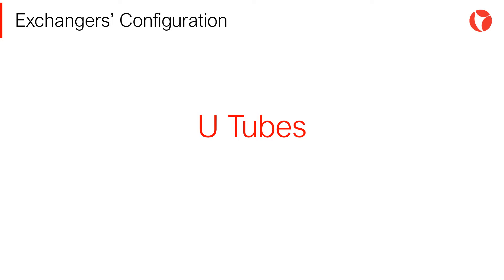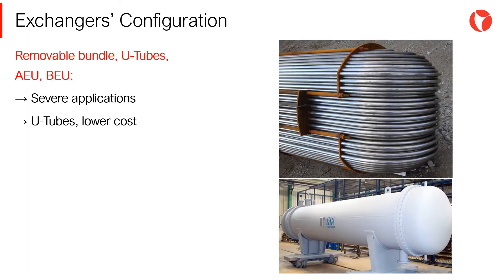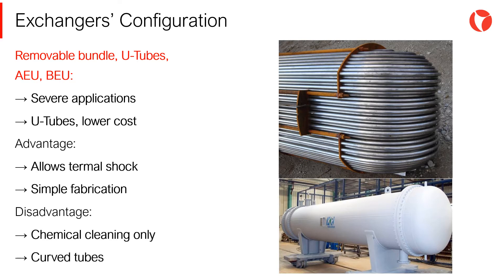The U-tube exchangers only have one tube sheet that supports and anchors all the tubes. This type absorbs thermal expansion at low cost. The main advantages are that they allow thermal shock, in other words, differential thermal gradients between the bundle and the shell. The fabrication of this type is very simple. On the disadvantages, only chemical cleaning can be performed inside the tubes with limited mechanical procedures, and the tubes must be curved, adding extra cost to the manufacturing process.